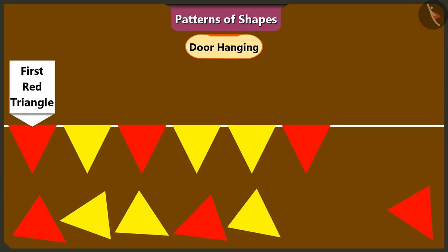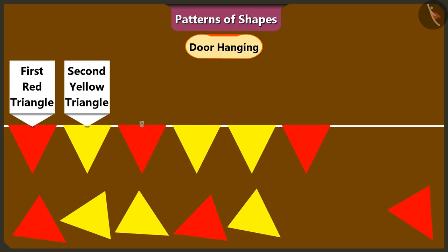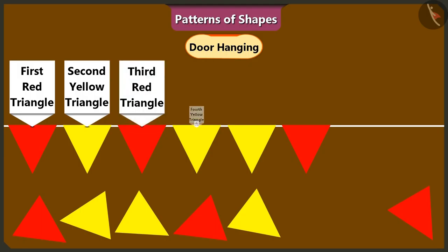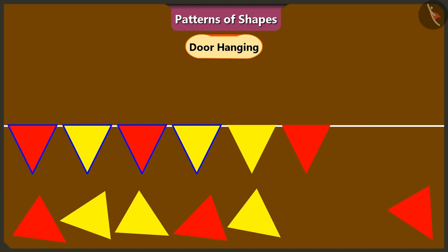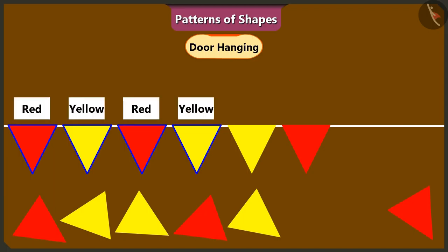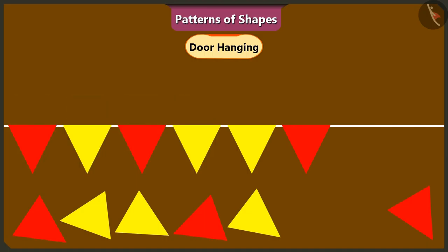In this toran, the first triangle is red and the second triangle is yellow in color. The third triangle is red in color and the fourth triangle is yellow in color. Both of you are correct. Children, all the shapes in this toran are triangles. Keep in mind the colors of the triangles and repeat the color pattern while making this door hanging or toran. We have understood. Let's get these triangles out and put them in the right order to make this toran.